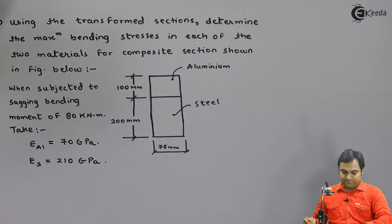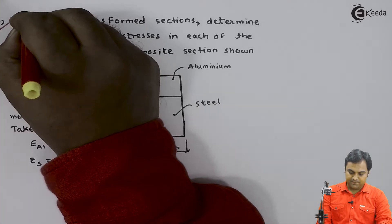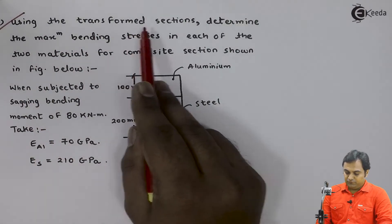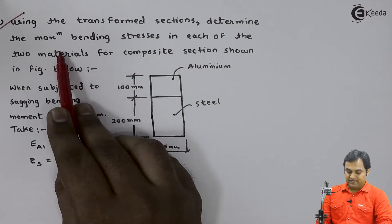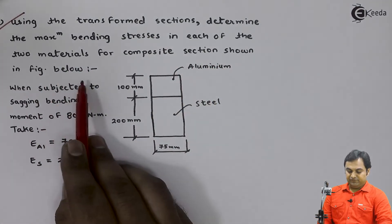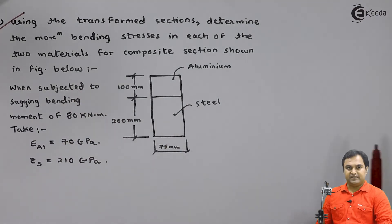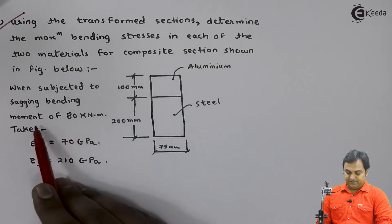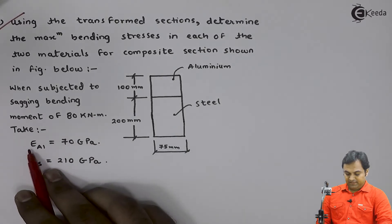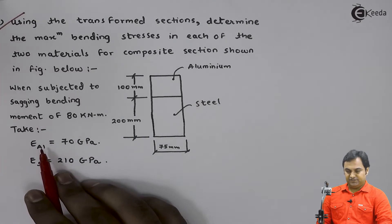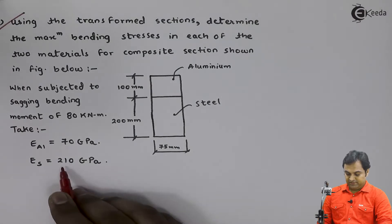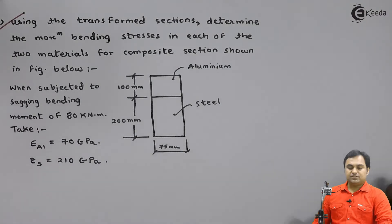Let us take the next problem on the flexural beam. Using the transformed sections, determine the maximum bending stresses in each of the two materials for the composite section shown in the figure below, when subjected to a sagging bending moment of 80 kilonewton meter. Take E_al (modulus of elasticity for aluminium) = 70 GPa and modulus of elasticity for steel = 210 GPa.